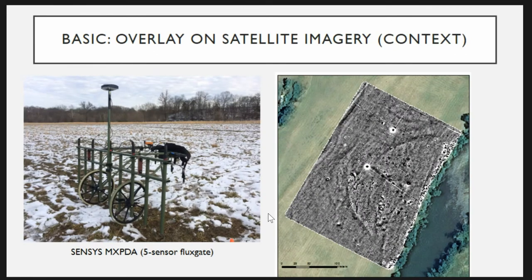We started with a magnetometer cart — the Sensys MXPDA with five fluxgate magnetometers. A very basic data integration: putting it on the satellite image. The Nola Chucky River is visible at the bottom of the map. The first thing I noticed were some dark lines, and at this scale it's harder to see, but there's a large structure and a lot of house-sized structures. Putting it in context suggested this could be evidence of fortification, or it could be paleochannel scars — so immediately you're generating more questions than answers.